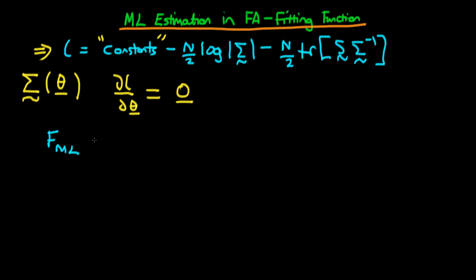I've written that as F_ML here to indicate we're talking about the fitting function with respect to maximum likelihood estimates. This fitting function equals log|Σ| minus log|S| plus the trace of S times Σ^(-1), and I've forgotten we also need to include the number of parameters p, which represents the number of observed variables.